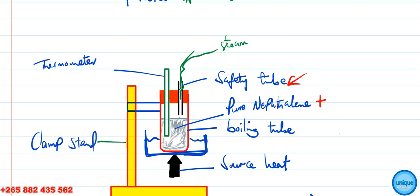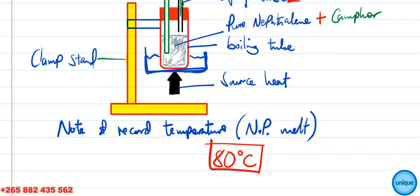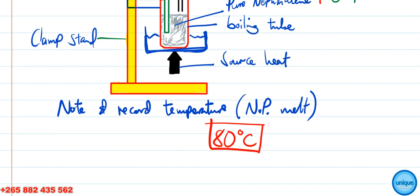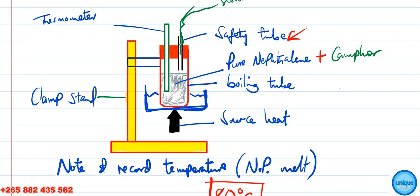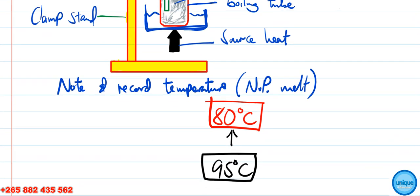This time you are adding camphor, which makes the mixture impure. Heat it and note and record the temperature at which the mixture has completely melted. The observation is that the temperature will be above 80 degrees Celsius — for example, around 95 degrees Celsius — because of the impurity introduced by the camphor. This higher melting point indicates the substance is impure.